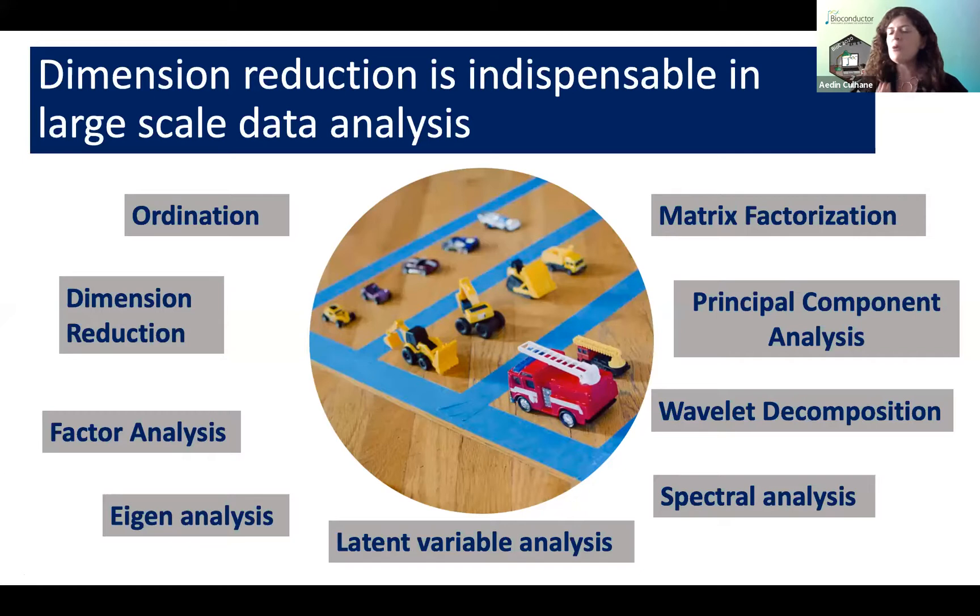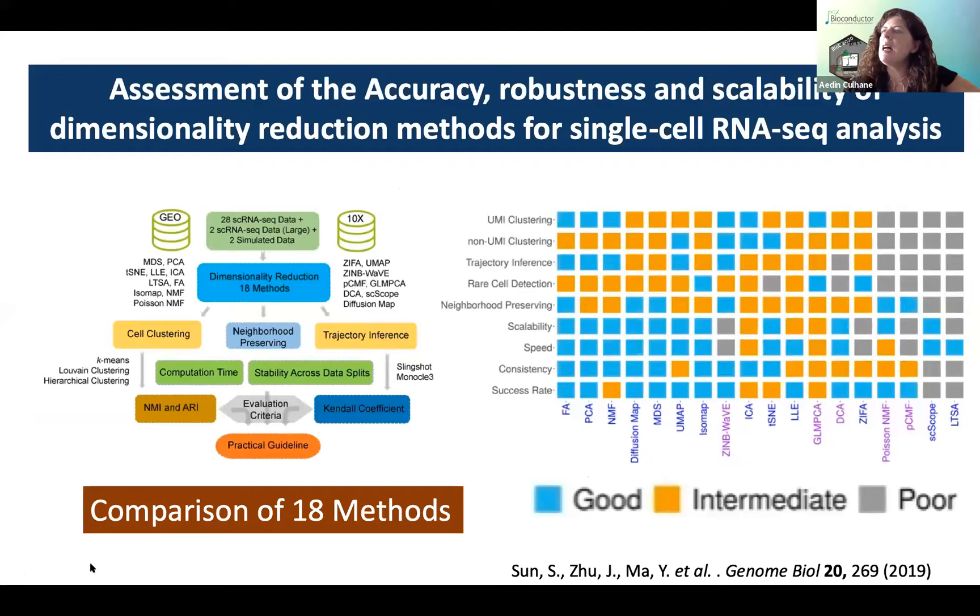Now, in a recent analysis, there was 18 different methods compared, and this is Sun et al, the University of Michigan, and it was published in genome biology. A lot of the newer methods didn't actually outperform these old methods. PCA was first described by Pearson in 1901. Factor analysis was described by Pearson Spearman in 1904. So these are really old methods. And indeed, as the data set grows, these actually become more similar to each other.